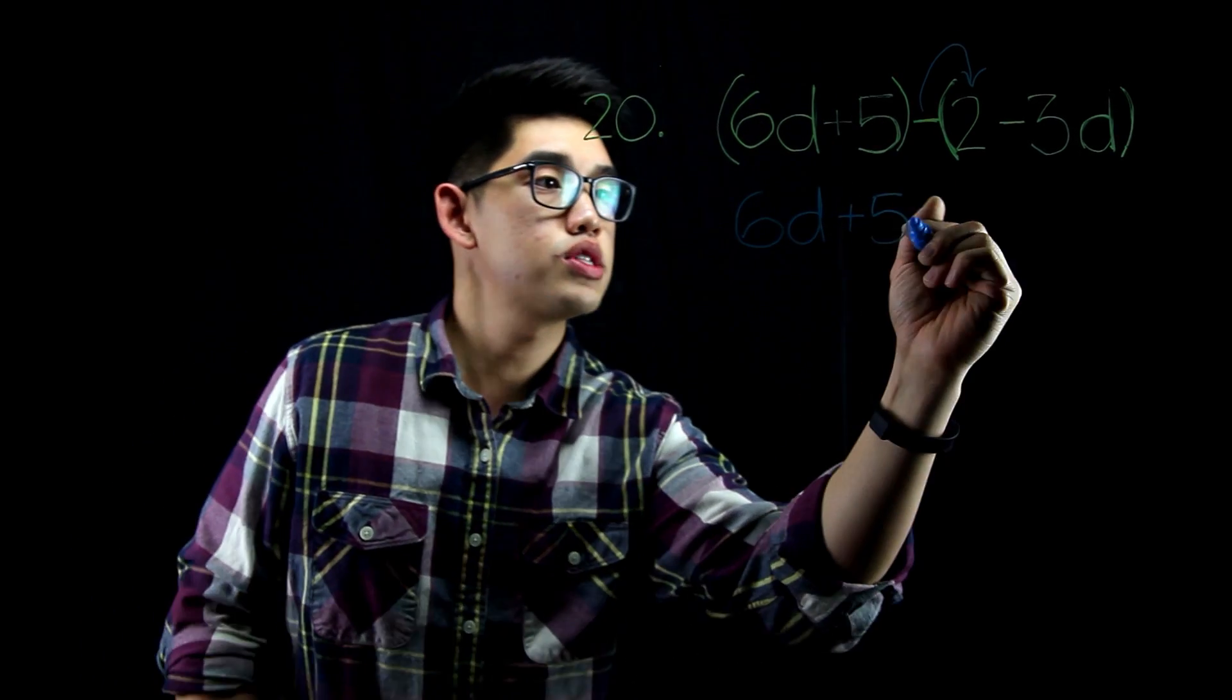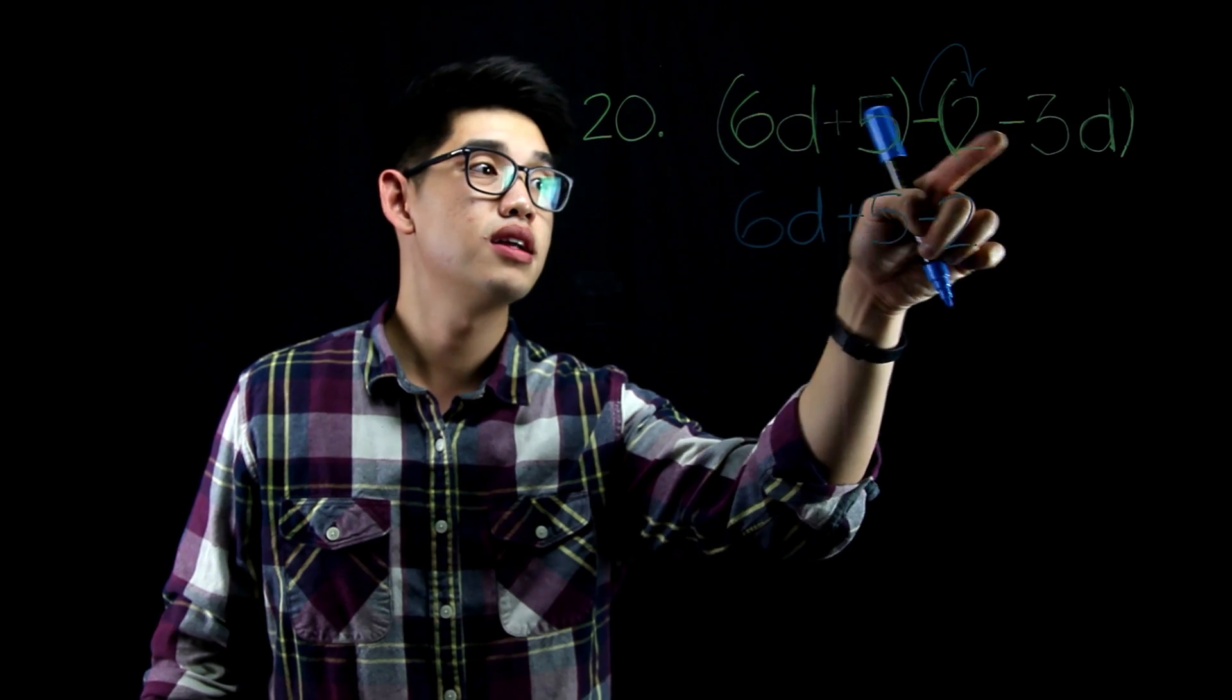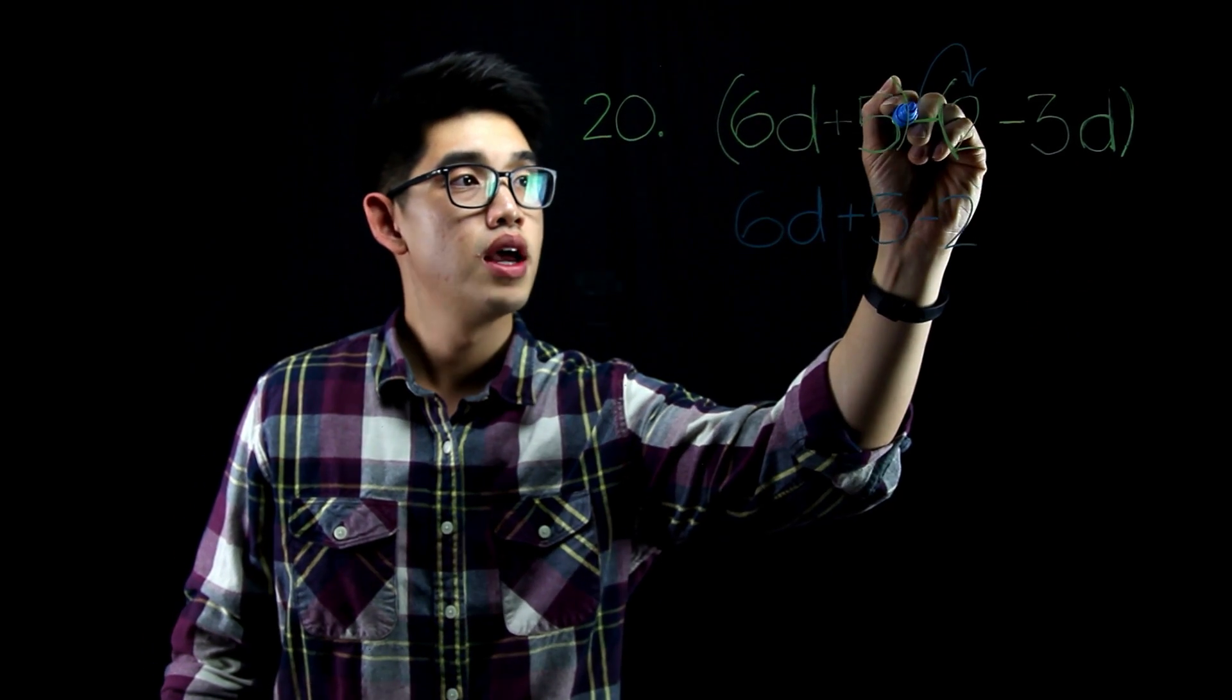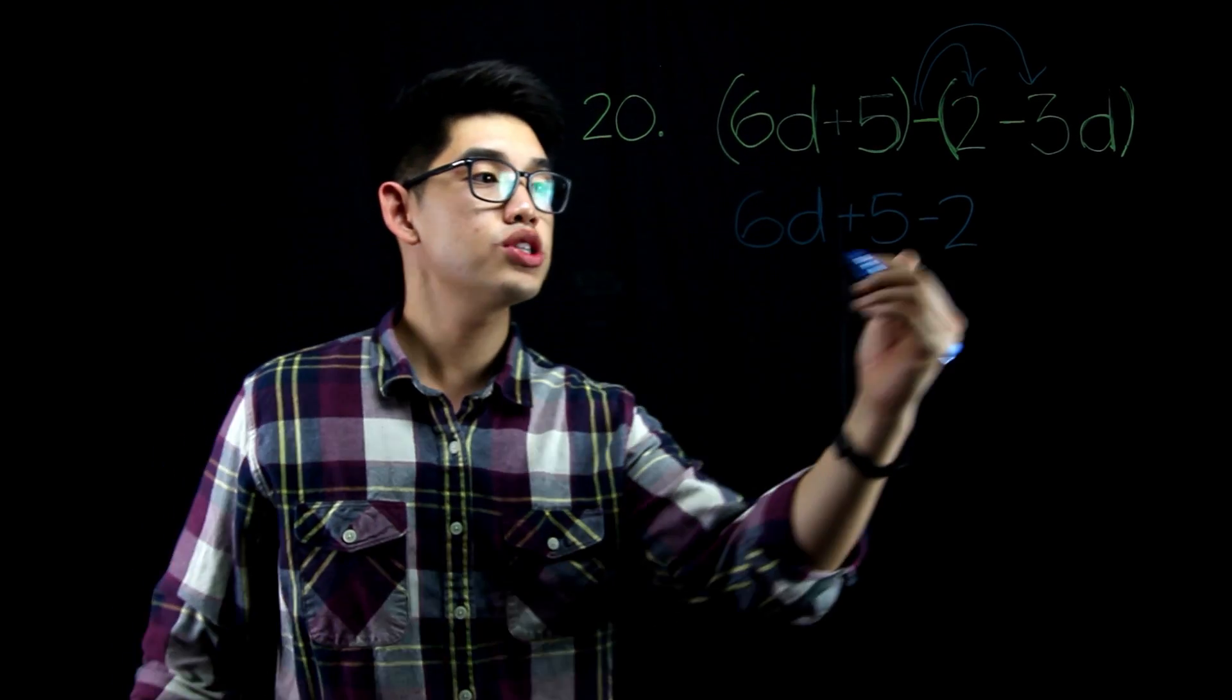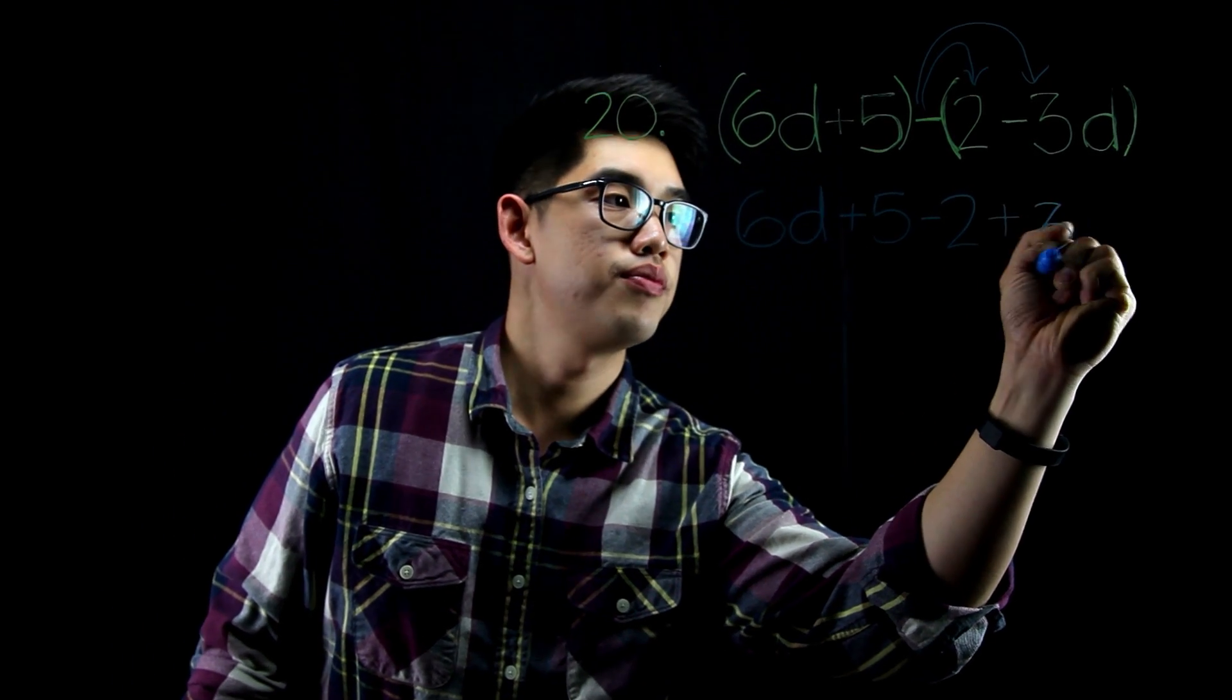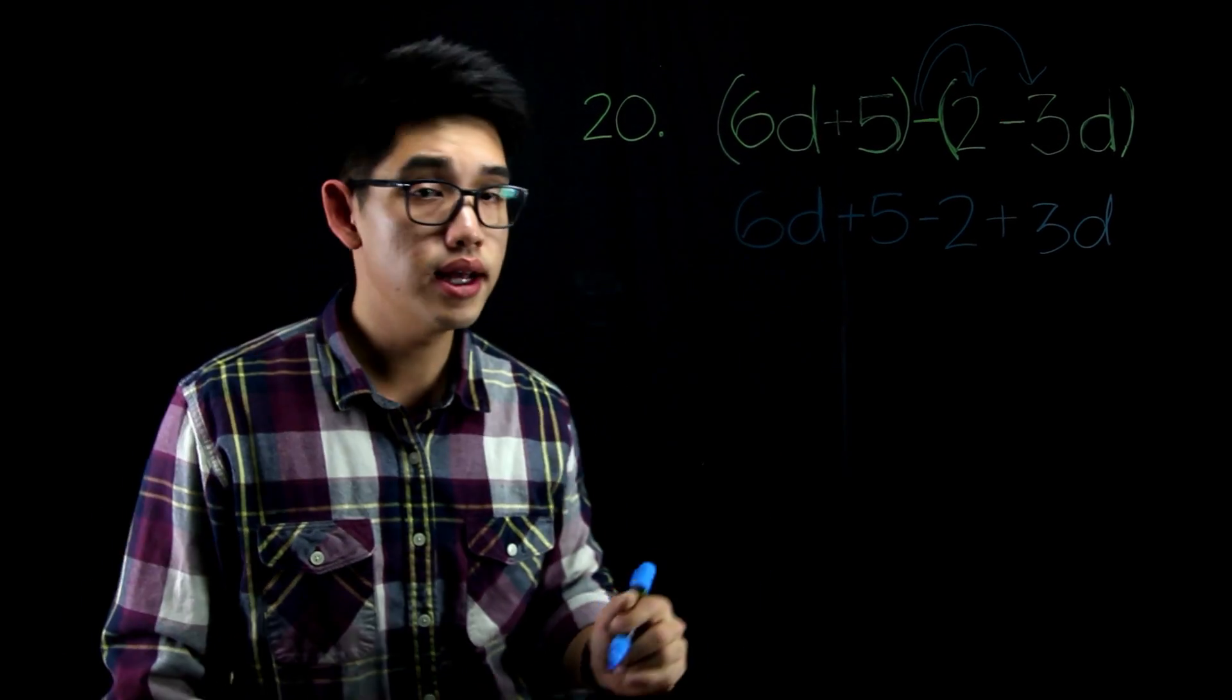And a lot of students forget to distribute the negative to the negative 3d. Negative times a negative 3d. When you're taking away a negative 3d, you're actually adding 3d. Now that the parentheses are gone, we can combine like terms.